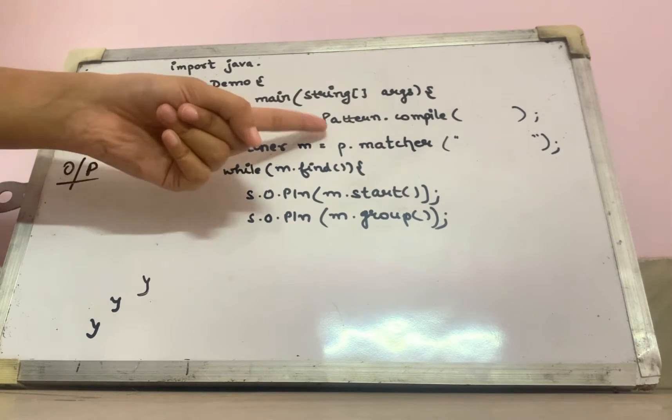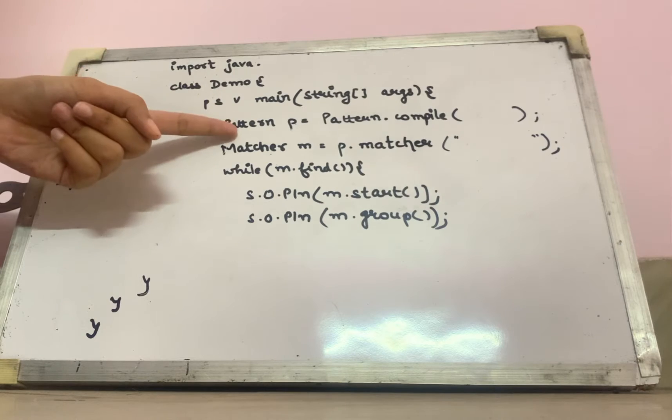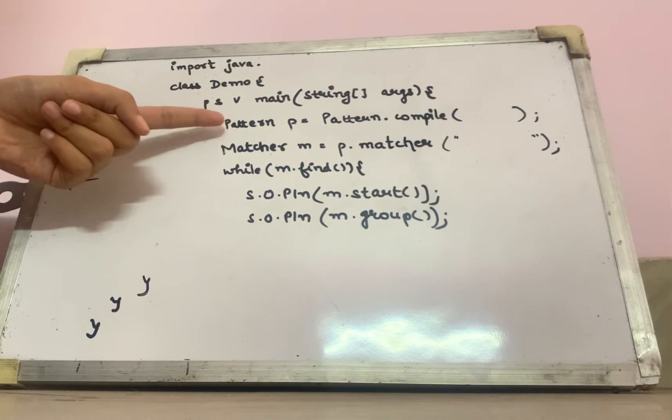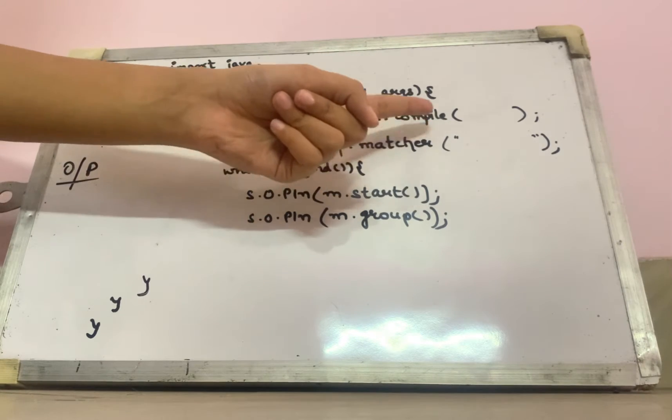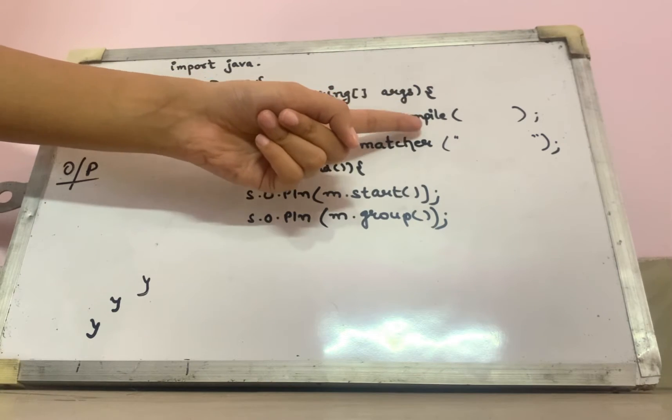Pattern P equals pattern dot compile. Now what is this pattern? Pattern is the class and this pattern dot compile method is a static method of pattern class. This compile method, what does it going to do?